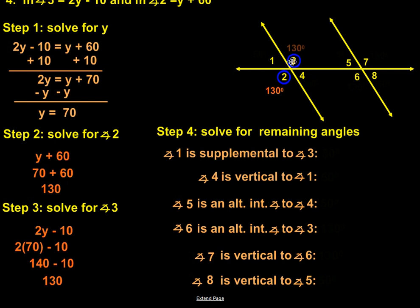So knowing the value of angle two and angle three, we can take the rules that we know and use them to solve for the additional angles. We'll start with number one. Angle number one is supplemental to angle number three. Supplemental means together they equal 180. So that means that angle one has to be 50 degrees. 50 plus 130 equals 180.